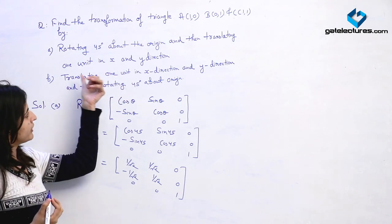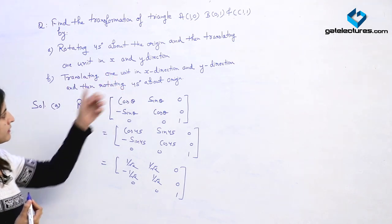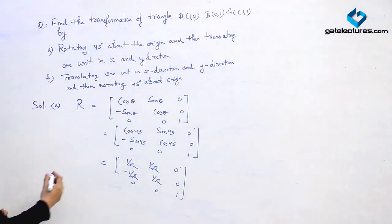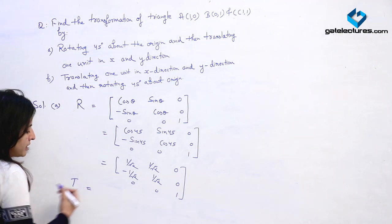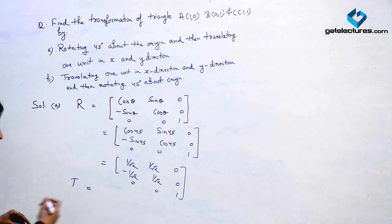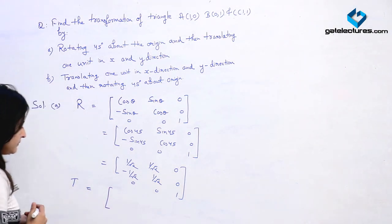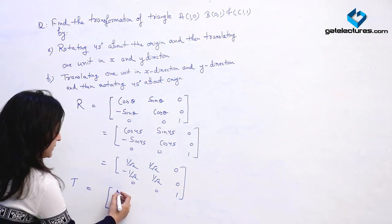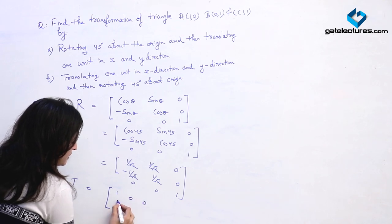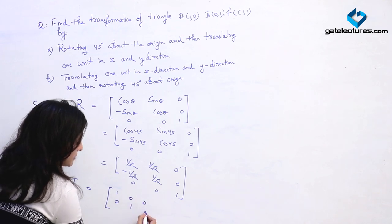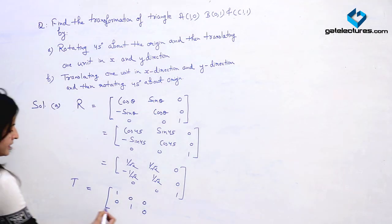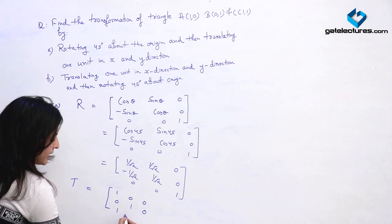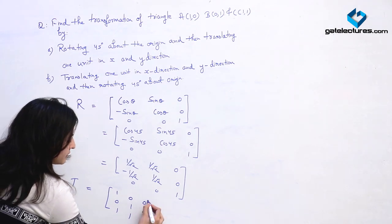This is the rotation part. Then we have to translate 1 unit in x and 1 unit in y direction, meaning tx = 1 and ty = 1. We will calculate the translation matrix T: [1, 0, 0], [0, 1, 0], [1, 1, 1].